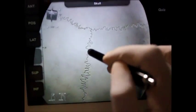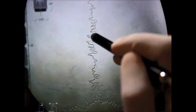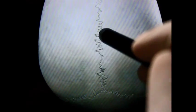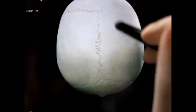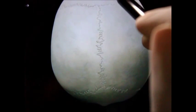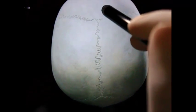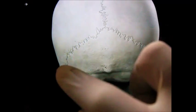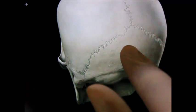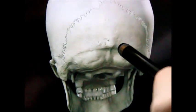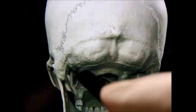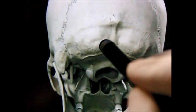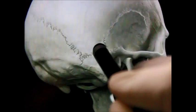You can see the sagittal suture joining two parietal bones, and in front we have the coronal suture joining the frontal bone. The lambdoid suture is named because it forms the Greek symbol lambda. Here we have the occipital crest, and inferiorly we have the superior nuchal lines where muscle attachments take place.